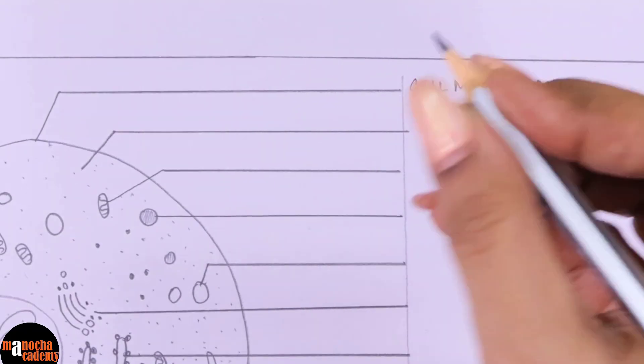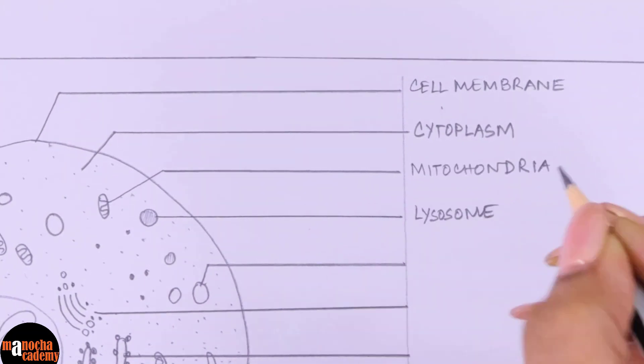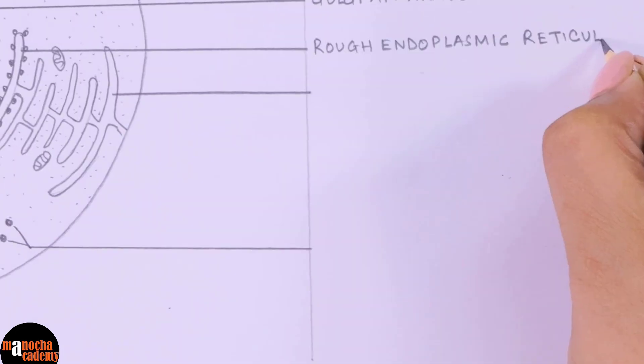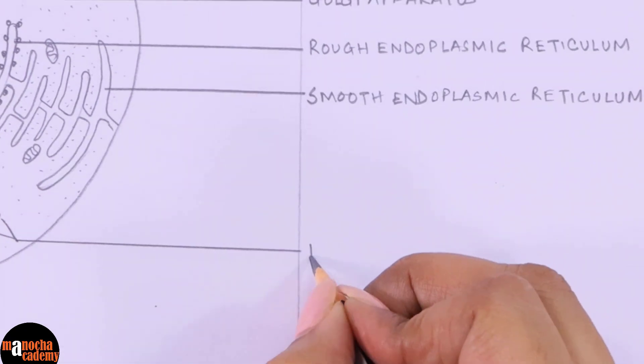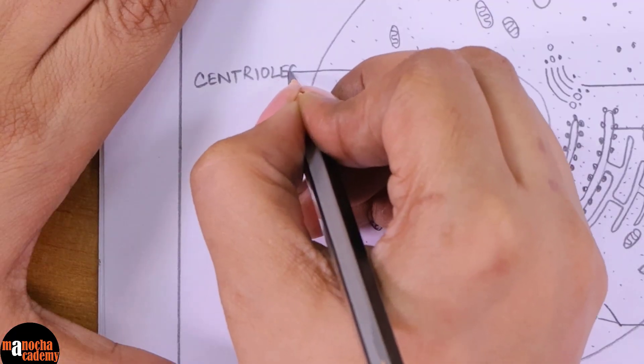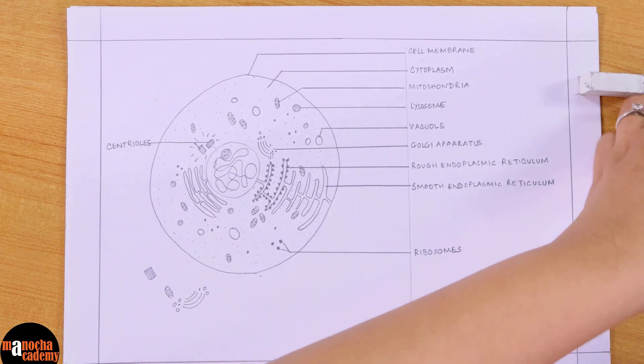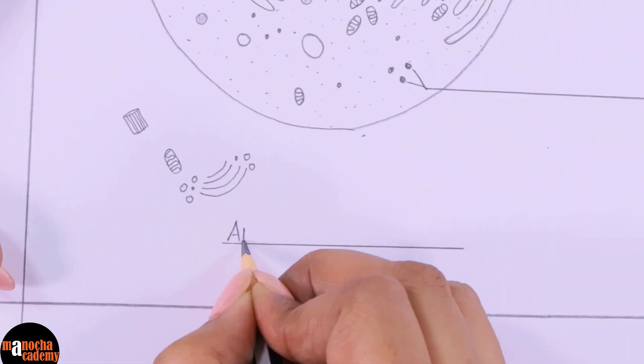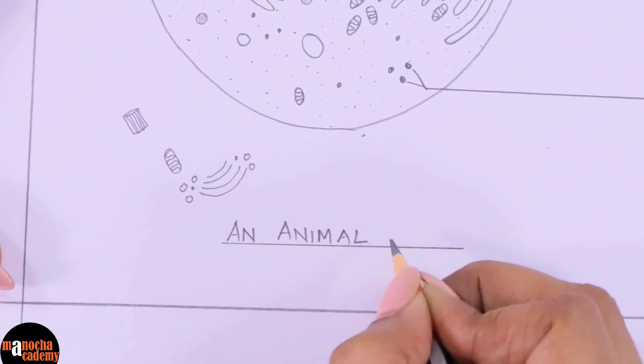Now let's label them. This is the cell membrane, cytoplasm, mitochondria, lysosome, vacuole, Golgi apparatus, rough endoplasmic reticulum, smooth endoplasmic reticulum, ribosomes and centrioles. So those are the parts of an animal cell. And now last but not the least, we will be putting a footer here and we will write an animal cell.